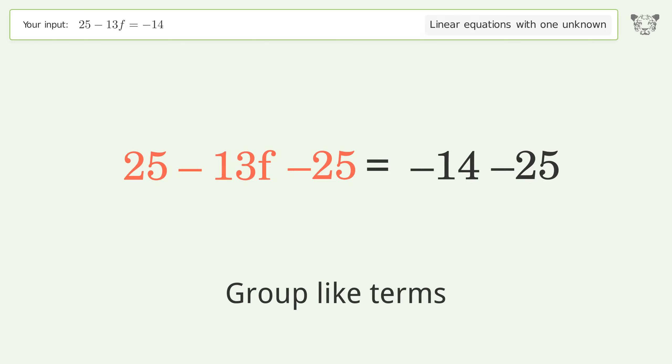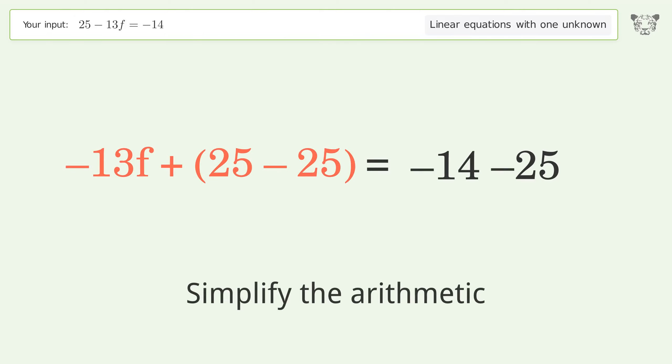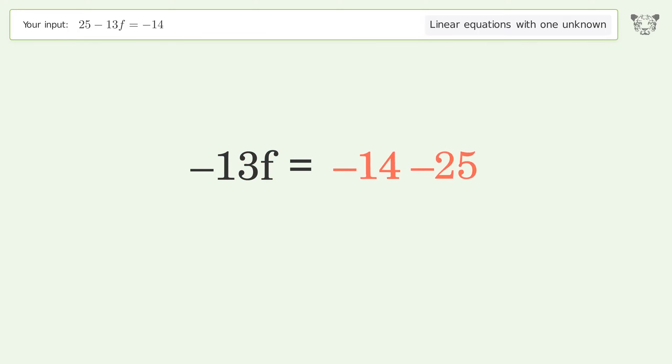Group like terms. Simplify the arithmetic. Isolate the f by dividing both sides by negative 13.